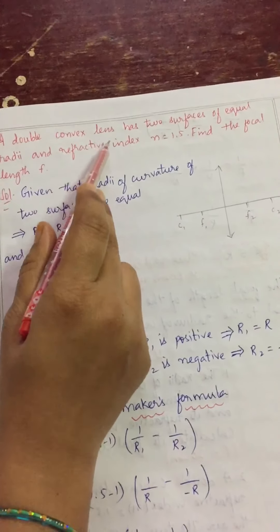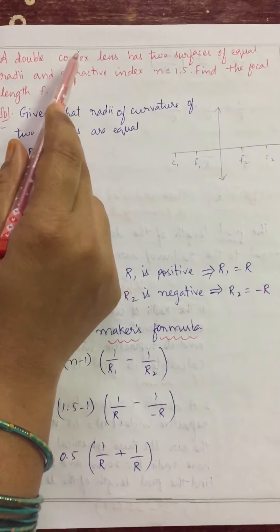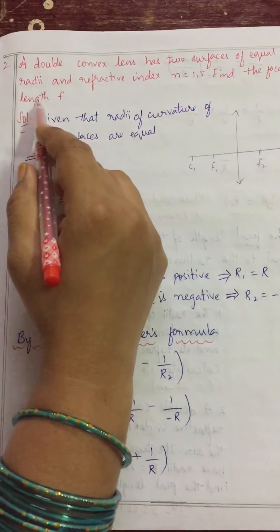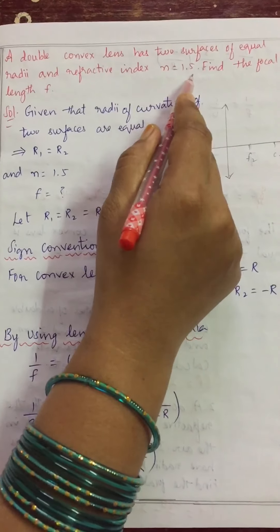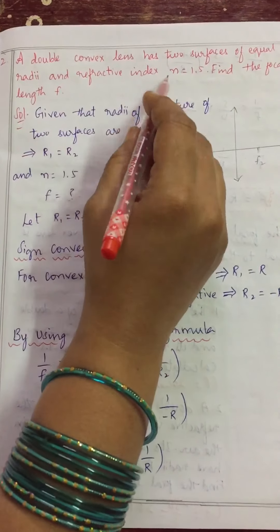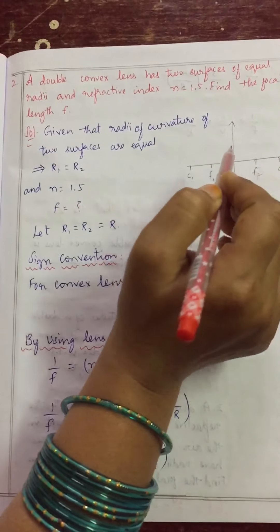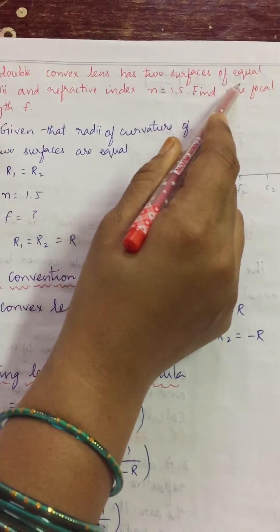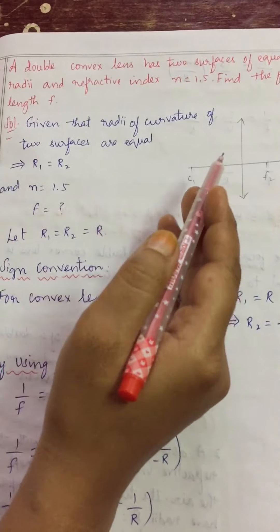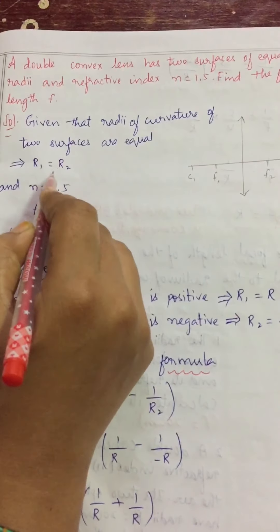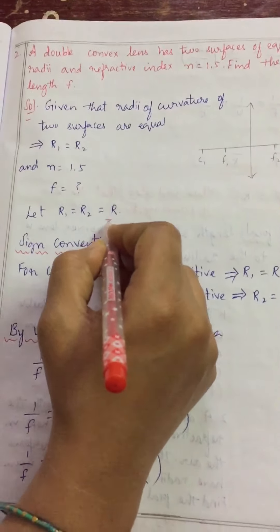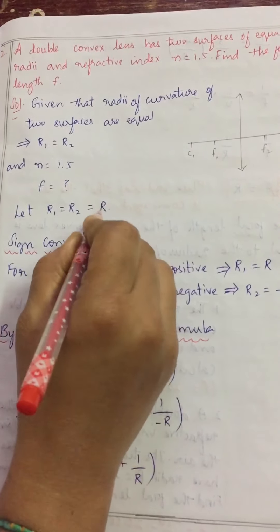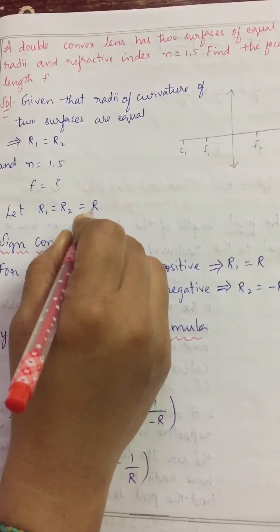Now we will solve one more problem. A double convex lens has two surfaces of equal radii and refractive index n = 1.5. Find the focal length. Since both radii are equal, we suppose R1 = R2 = R. Since both are unknown, we assume the value R.